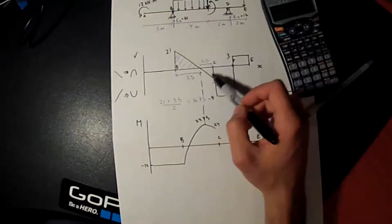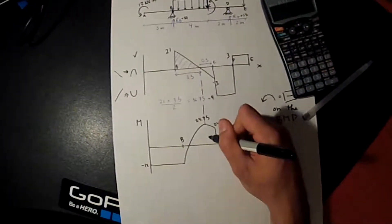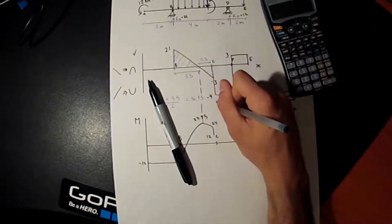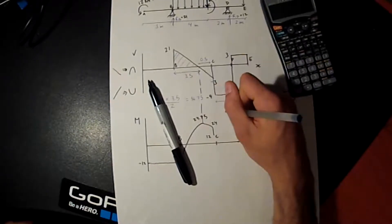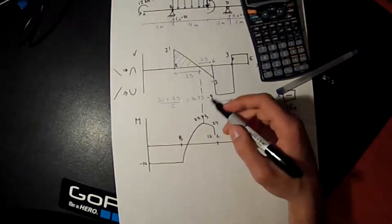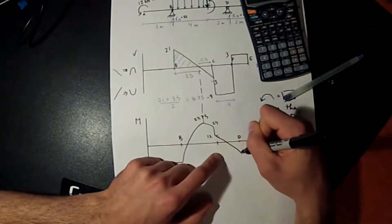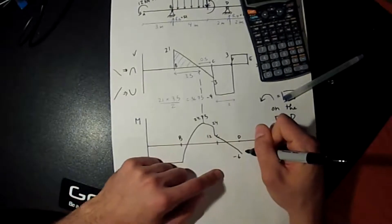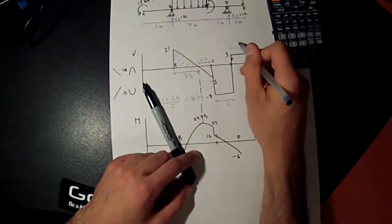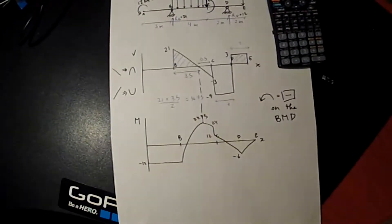Before doing the next area, there's an external moment at C of negative 12, so we push down to 12. Now we take the area from C to D — it's negative 9 times the distance of 2, so it's a rectangle: 9 times 2 equals 18. We decrease by 18: 12 minus 18 gives negative 6. Since it's a horizontal line in the shear diagram, the bending moment decreases as a straight slope. Finally, the last area is 3 times 2 equals 6, which brings us back to 0. Again, you should always be back at 0, because there shouldn't be any moment at the end of the beam.